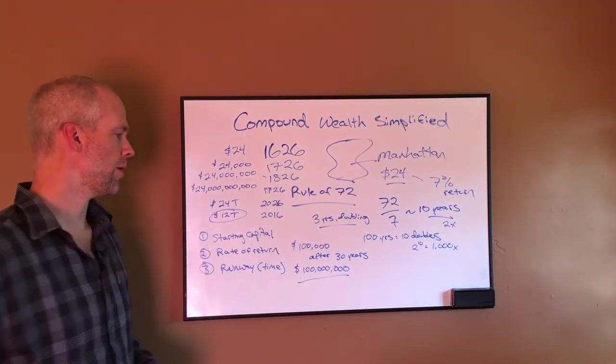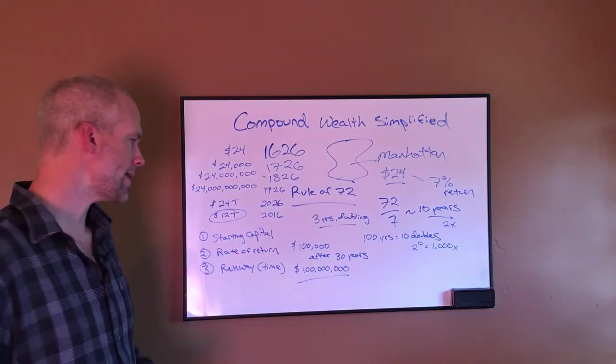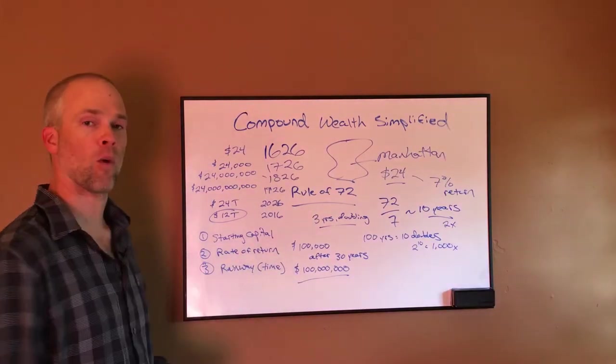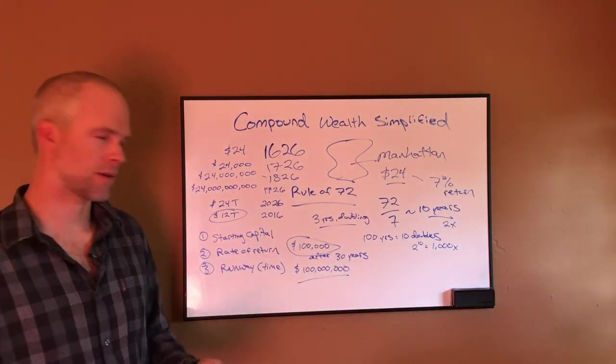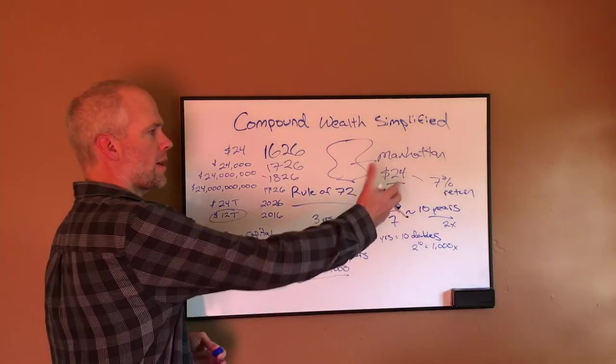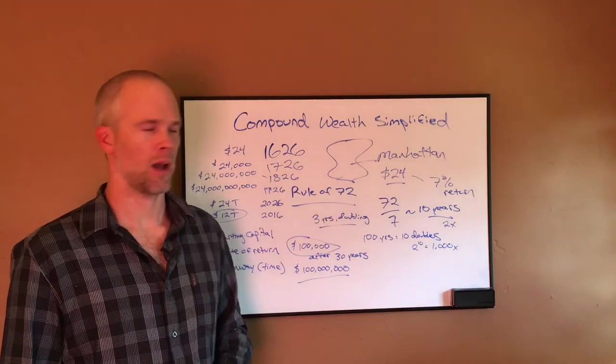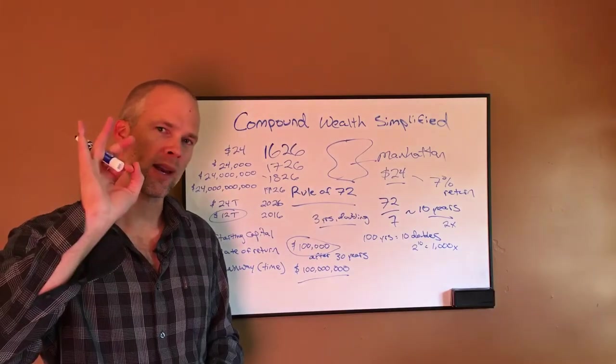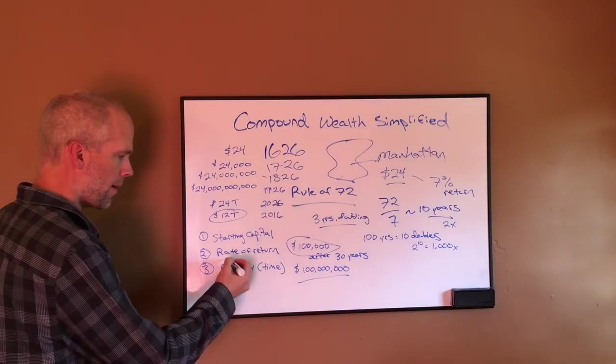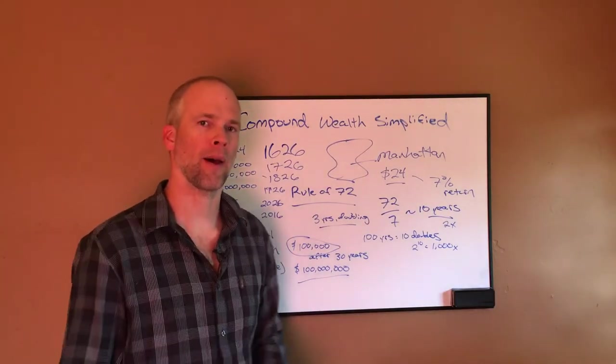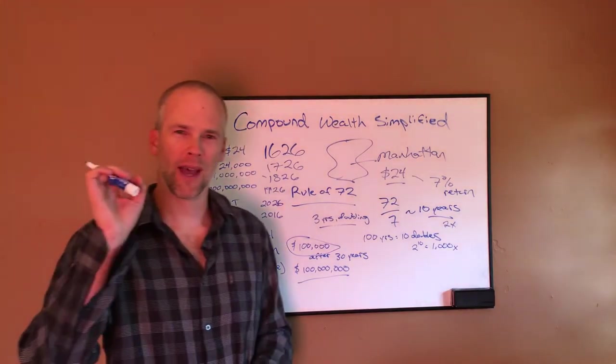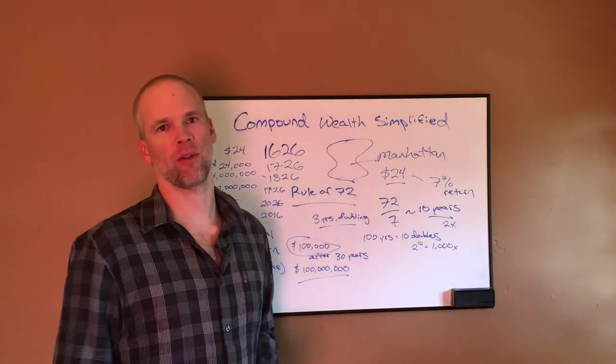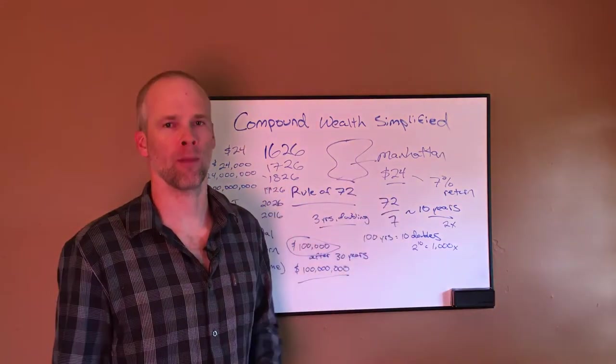Obviously, the more you start with, you start with a hundred thousand and you double it 10 times, you're going to have a hundred million. If you only start with a thousand and you double it 10 times, you're going to have one million. So obviously the starting capital makes a huge difference. Rate of return. If you're looking at 7%, you're going to double your money every 10 years. If you do what Buffett was doing at around a 24, 26% rate of return, you can double your money every three years. So that's going to speed up the snowballing compound growth effect. And then the last one is time. If you guys have enough time, you can make what seemed like the meager, the measliest rates of return turn a small amount of money into an enormous amount of money.